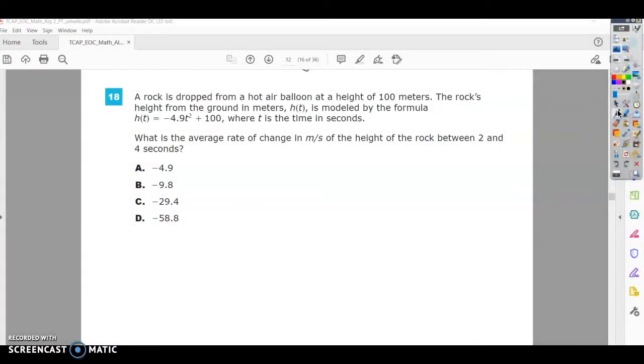Alright, this is number 18 on the Algebra 2 practice test. A rock is dropped from a hot air balloon at a height of 100 meters. The rock's height from the ground in meters, h of t, is modeled by the formula h of t equals negative 4.9 t squared plus 100, where t is the time in seconds. What is the average rate of change in meters to seconds of the height of the rock between 2 and 4 seconds?